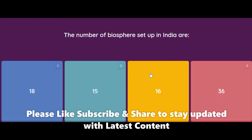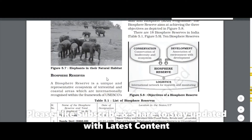The first MCQ: the number of biosphere reserves set up in India — 18, 15, 16, or 36? The correct answer is 18. A biosphere reserve is a unique and representative ecosystem of terrestrial and coastal areas which are internationally recognized within the framework of UNESCO.